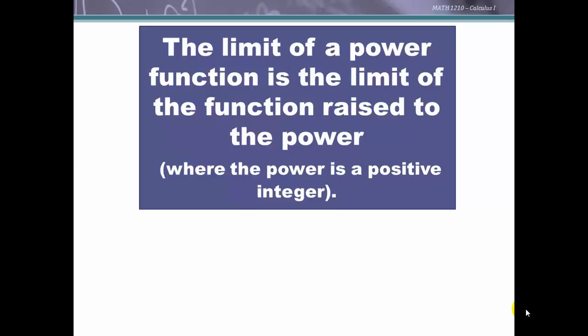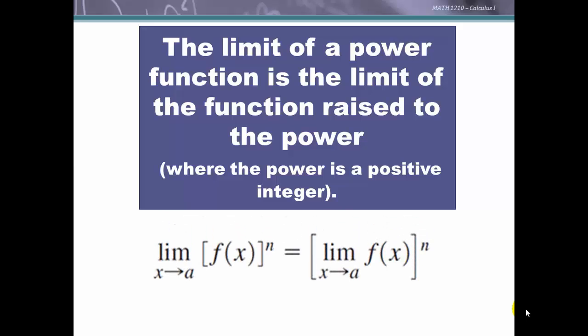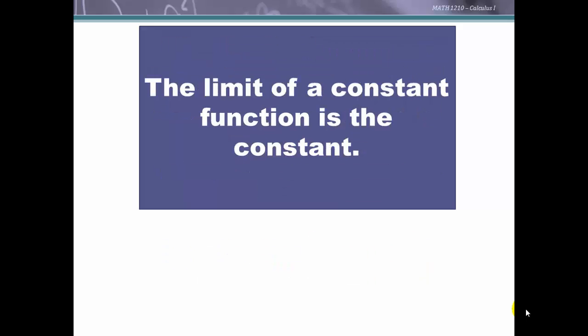The limit of a power function is the limit of the function raised to the power, where the power is a positive integer. This is essentially a repeated application of the product rule, because f(x)^n is just f(x) multiplied by itself n times. Applying the product rule repeatedly gives us the limit of f(x) as x approaches a, raised to the nth power.